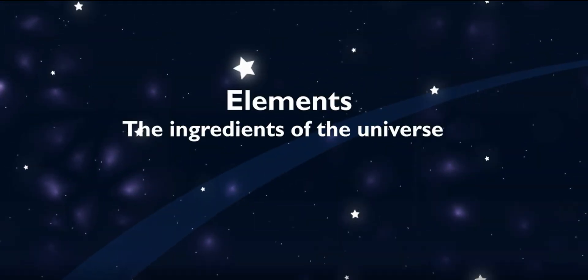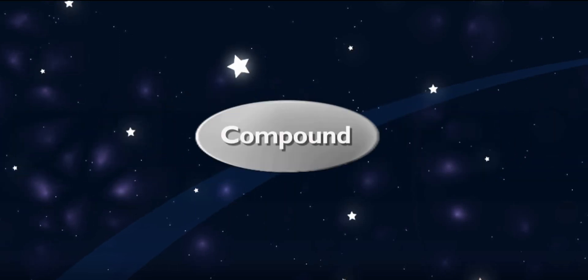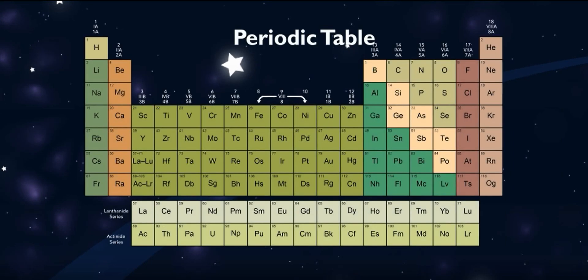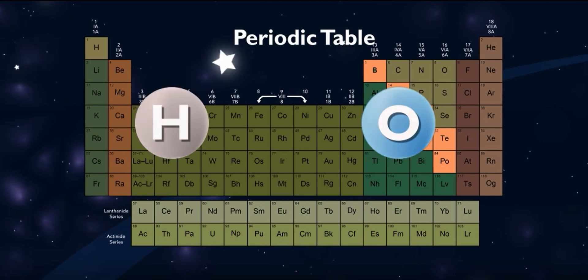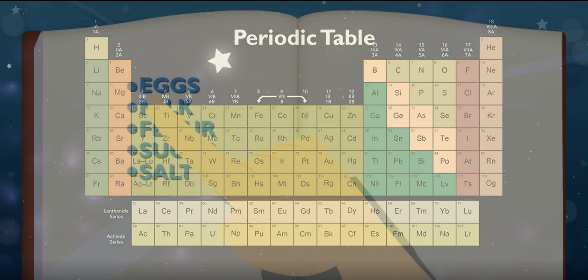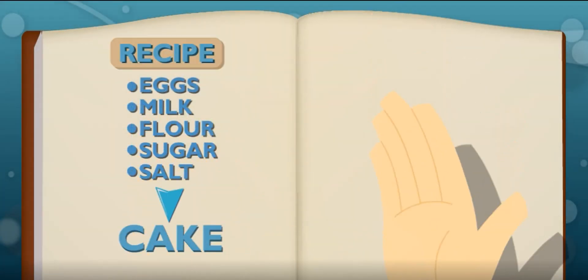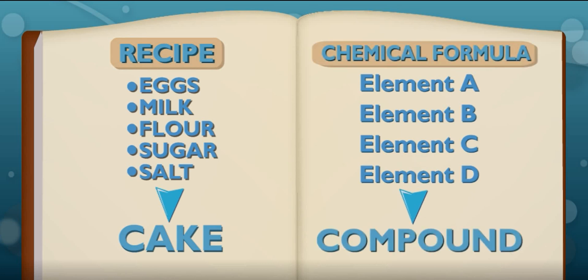So elements are the ingredients for the universe? Kinda, yeah. The universe combines elements to make compounds. There are 118 elements and they're each listed on the periodic table. Every element has a symbol, too, like O for oxygen or H for hydrogen. That's a lot of ingredients. When we combine ingredients to make a cake, it's called a recipe. When elements combine to make a compound, it's called a chemical formula.